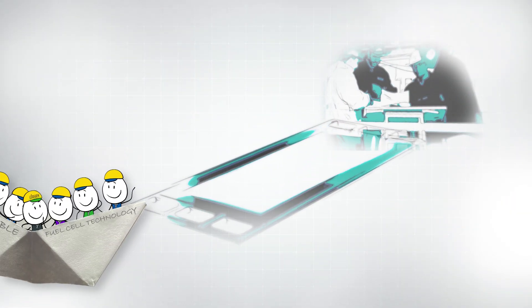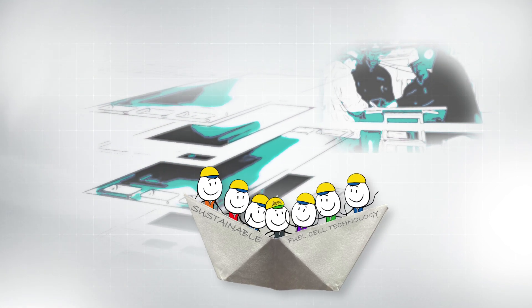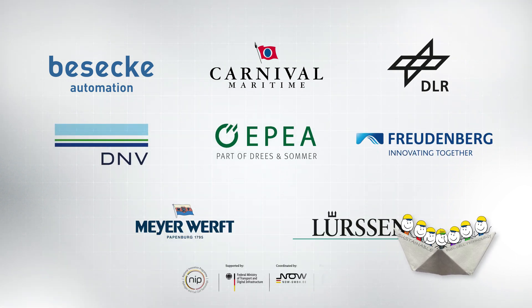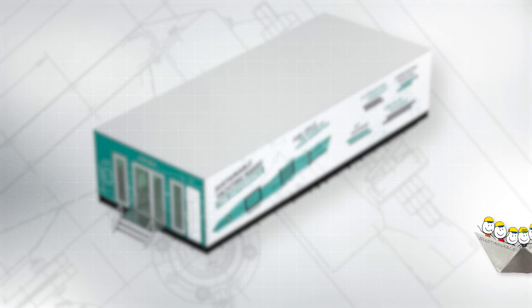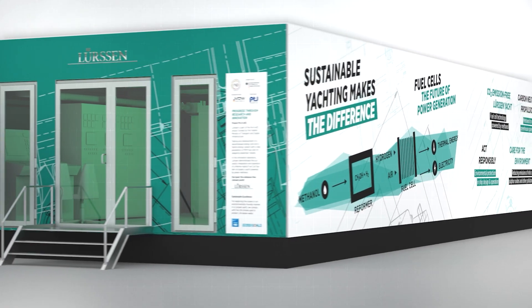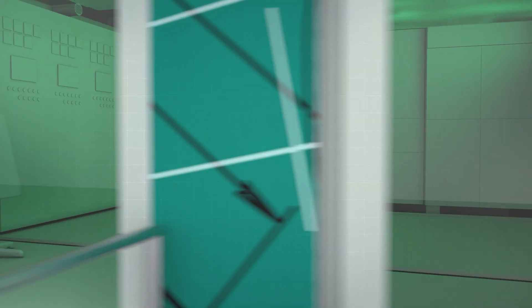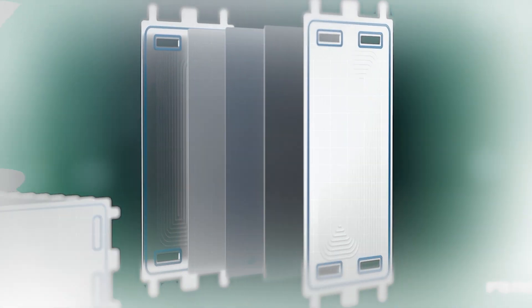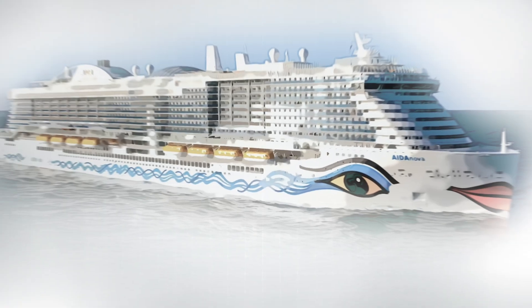In order to advance sustainable shipbuilding, Lürssen has been involved in research projects aimed at using fuel cells on ships since 2005. Since 2009, Lürssen has been a partner in the national research project PACCELL. The aim is to develop and test a hybrid energy system with a new generation of PEM fuel cells for yachts and seagoing passenger vessels.